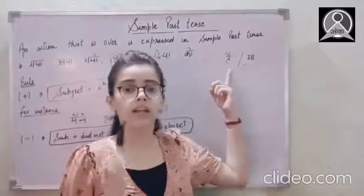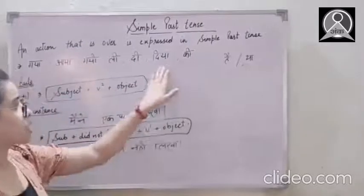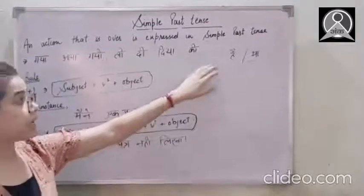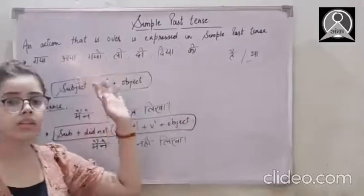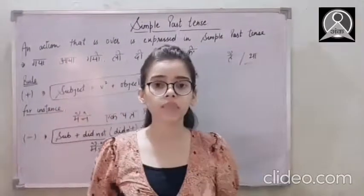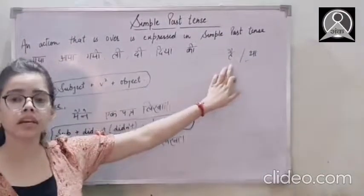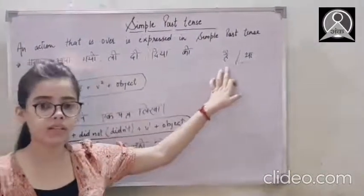When there is hai, then like if there is dia hai, ki hai, di hai, li hai, hai is everywhere with these words. Then it is not simple past tense. It is present perfect tense. Why? Because remember one thing, hai always represents present tense.